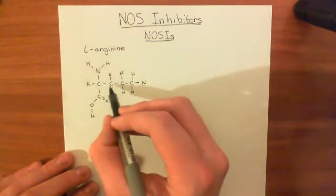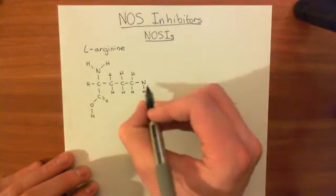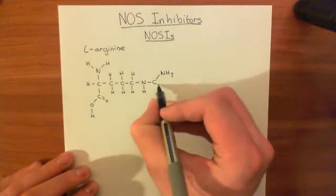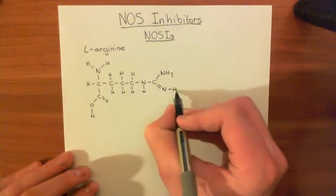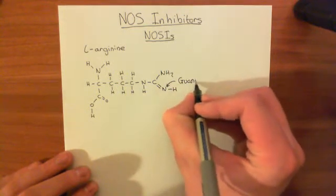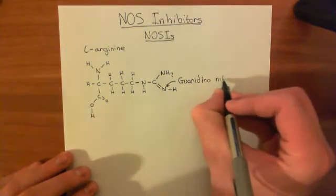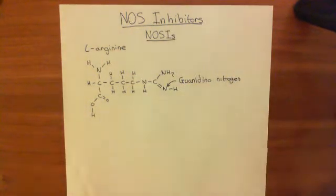Here is the structure of L-arginine: the generic amino acid structure, then three methylene groups, then a nitrogen, then a carbon bonded to an amino group, and then the guanidino nitrogen with a hydrogen off it. This is called the guanidino nitrogen — it is the nitrogen that will end up within the nitric oxide after the enzyme converts L-arginine into L-citrulline in the process of creating nitric oxide.